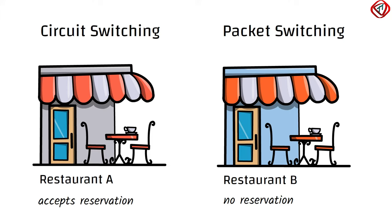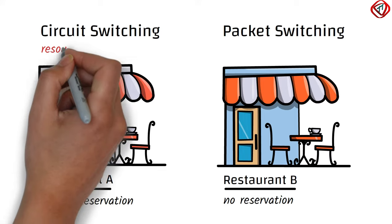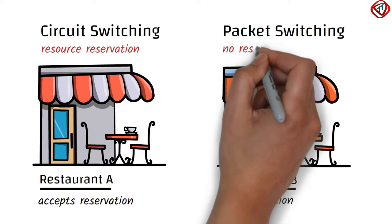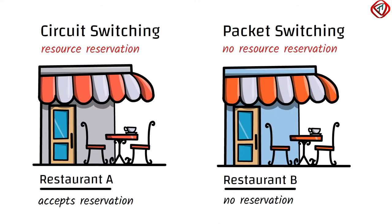Circuit switching is analogous to Restaurant A, which accepts reservation. On the other hand, packet switching is analogous to Restaurant B, which does not accept reservation. That is, in circuit switching, resources are reserved for the communication session. On the other hand, resources are not reserved in packet switching.